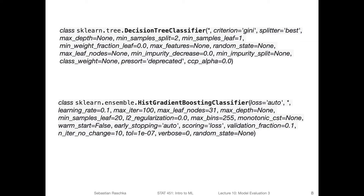Here are some more examples — I copied these definitions from scikit-learn. When you initialize a decision tree classifier, these are just the options. Another case for hyperparameters would be, for example, the impurity measure, which could be Gini or entropy, or the depth of the tree for pre-pruning, and the minimum number of samples per leaf. These would all be hyperparameters. Something like the random state or random seed would not be a hyperparameter, because changing the random seed to see which one performs better would be cheating — you shouldn't tune that.